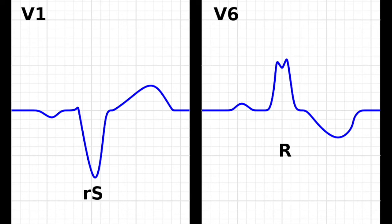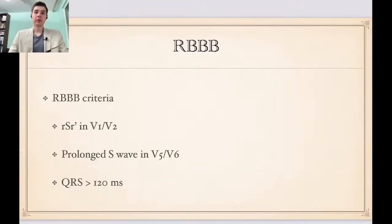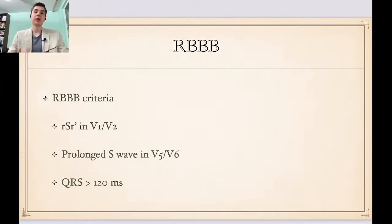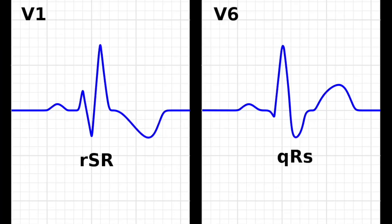This is how a left bundle branch block looks like. For the right bundle branch block, the criteria are an RSR' pattern in V1 and V2, a prolonged S wave in V5 and V6, and again, the QRS complex is greater than 120 milliseconds. This is how a right bundle branch block looks like.